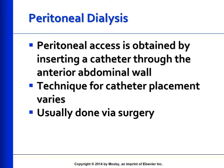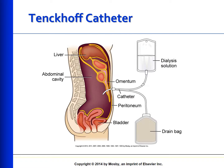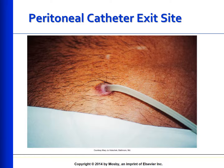The technique for catheter placement varies, but surgery for proper visualization and placement minimizes complications. Preparation of the patient for catheter insertion includes emptying the bladder and bowel, weighing the patient, and obtaining a signed consent form. After placement, dialysis can be started immediately with low volume exchanges or delayed for two weeks pending healing of the exit site. Once healed, the patient may shower and pat the catheter and exit site dry. All patients should be taught to examine the catheter site for signs of infection, and dressings should be changed every day.